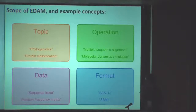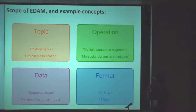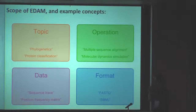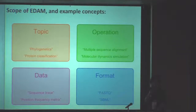Types of data include, for example, sequence trace, sequence record, position frequency matrices, UniProt accession, or Ensembl gene ID — all those are types of data. And formats of data include FASTA, FASTQ, SBNL, bioXSD, and RDF, of course.